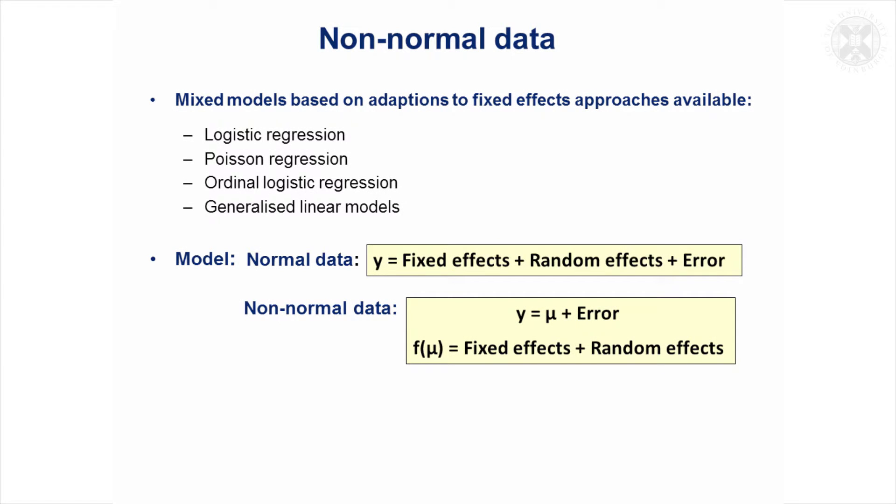Just as with mixed models, you can analyze normal data and non-normal data as repeated measures. There are adaptations available and you can do logistic regression, Poisson regression if you've ever done that suitable for count data, ordinal logistic regression suitable for data where you've got ordered categorical variables, and these are all types of generalized linear models.